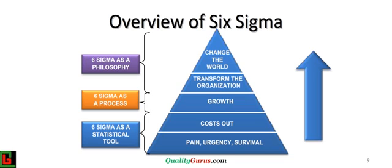Six Sigma has three different meanings. As a statistical tool, it focuses on maintaining 3.4 defects per million opportunities. As a process, it focuses on DMAIC approach of process improvement. DMAIC means define, measure, analyze, improve, and control. We will learn DMAIC approach later in this course.